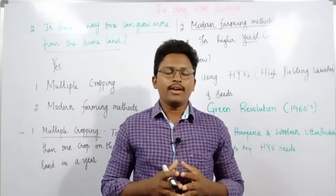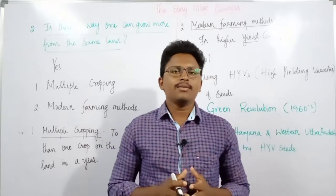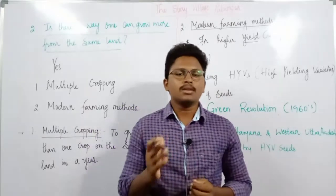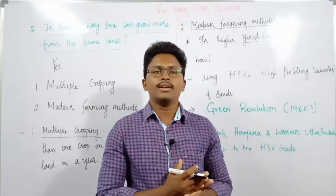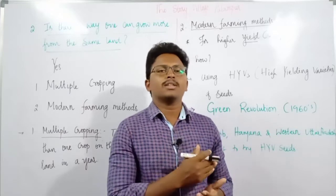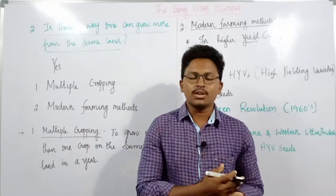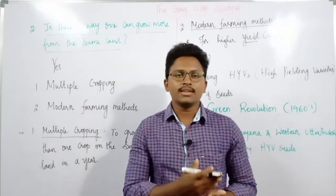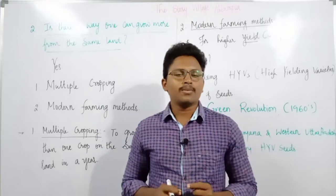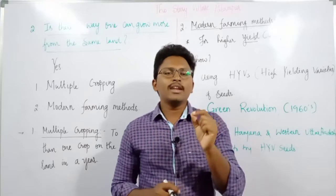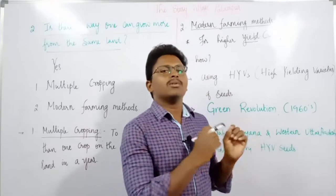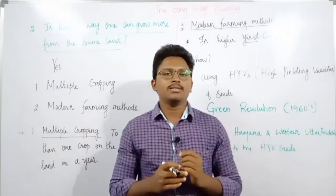Hello everyone, this is Ravinder Dundra and welcome to my channel. In this lecture we will continue the topic from Class 9th CBSE Economics, that is the Story of Village Palampur. In the previous lectures we have discussed about the introduction and overview of the chapter, where Palampur is located, and the features of this village — road conditions, electricity connection, irrigation facilities, health centers, schools. The main aim of the chapter is to discuss the factors of production by taking an example of an imaginary village known as Palampur.